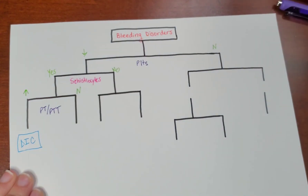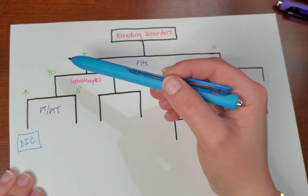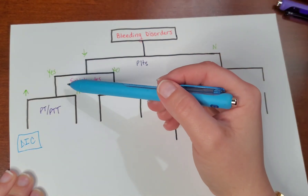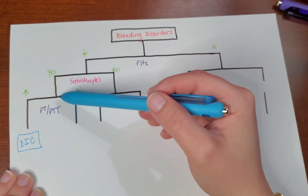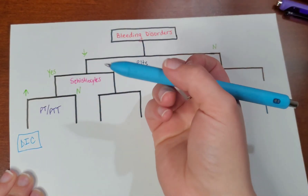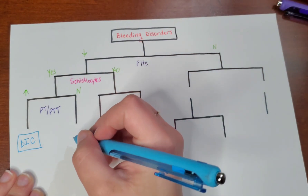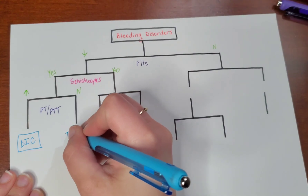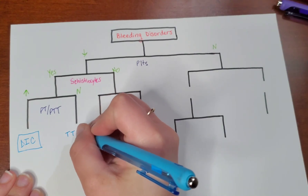Now if the platelets are decreased, you are seeing schistocytes, but PT and PTT are normal, this would be TTP.